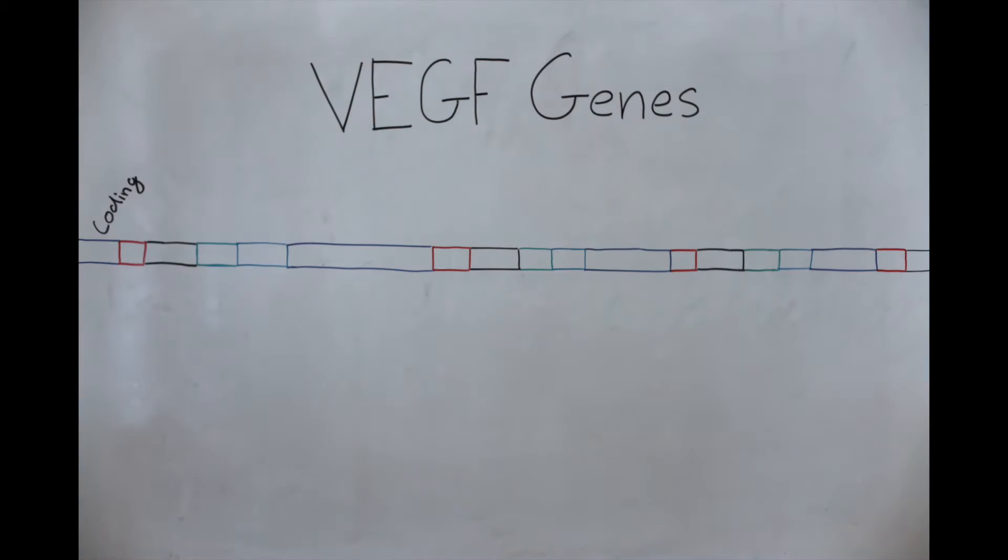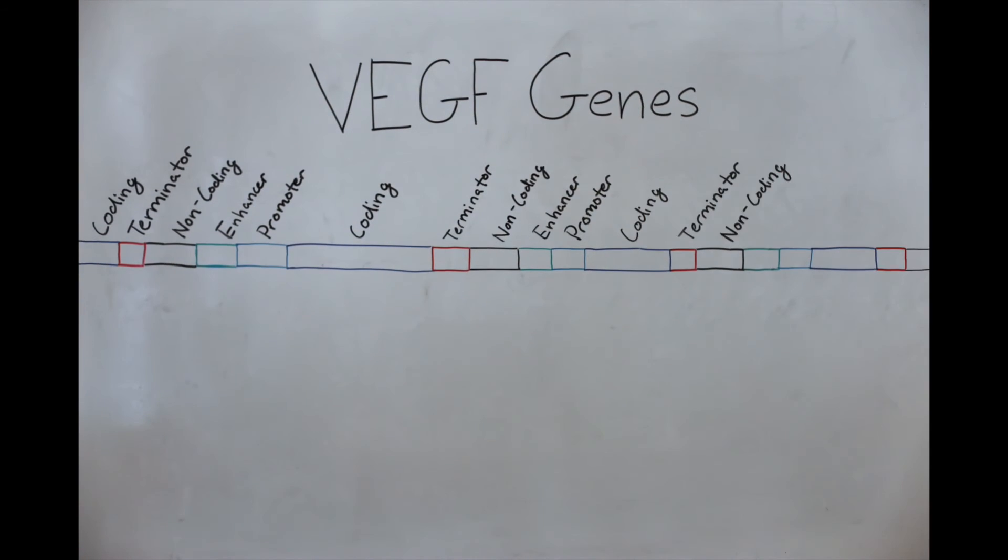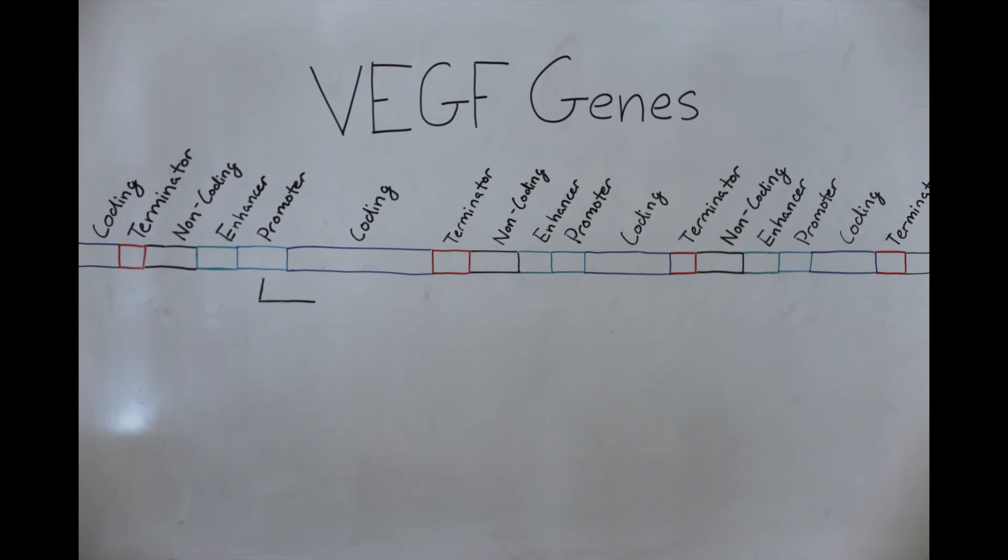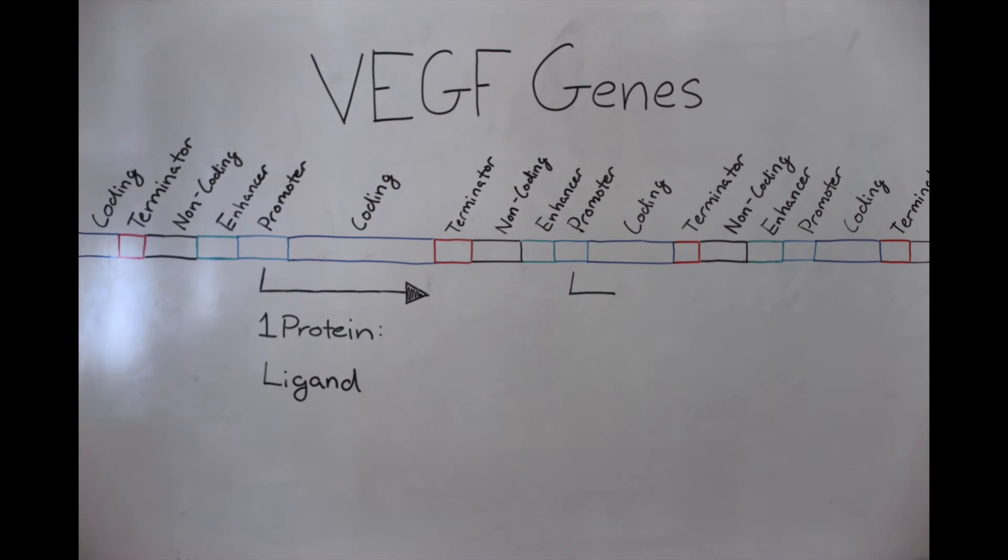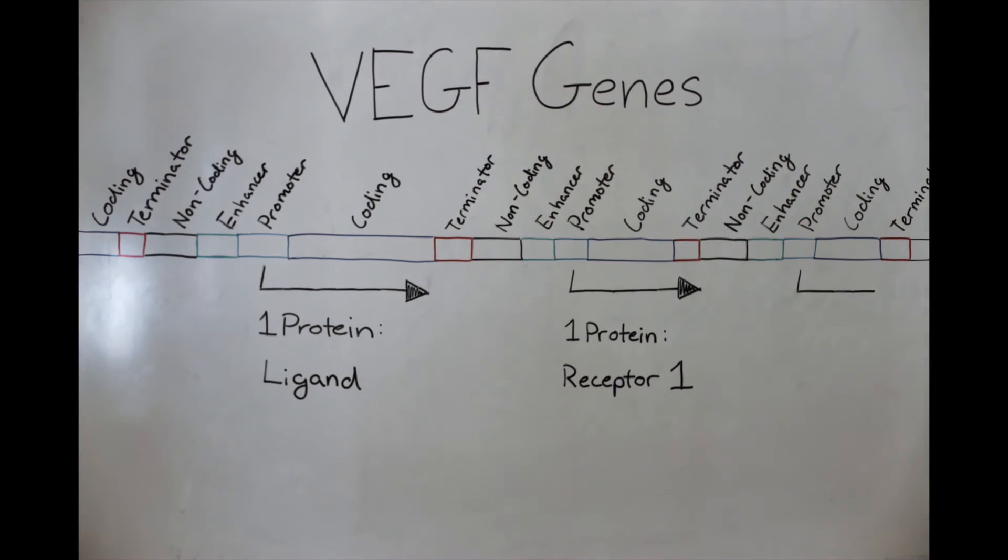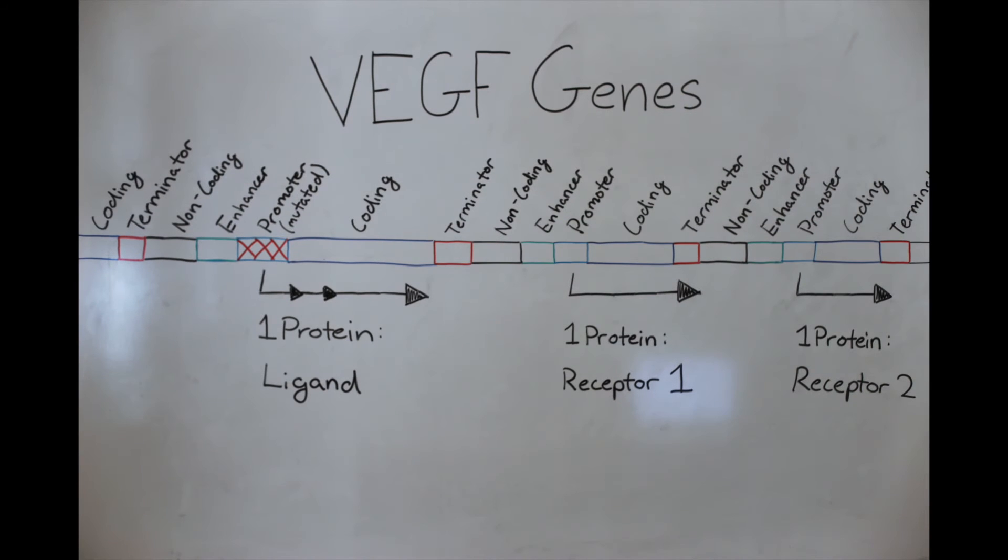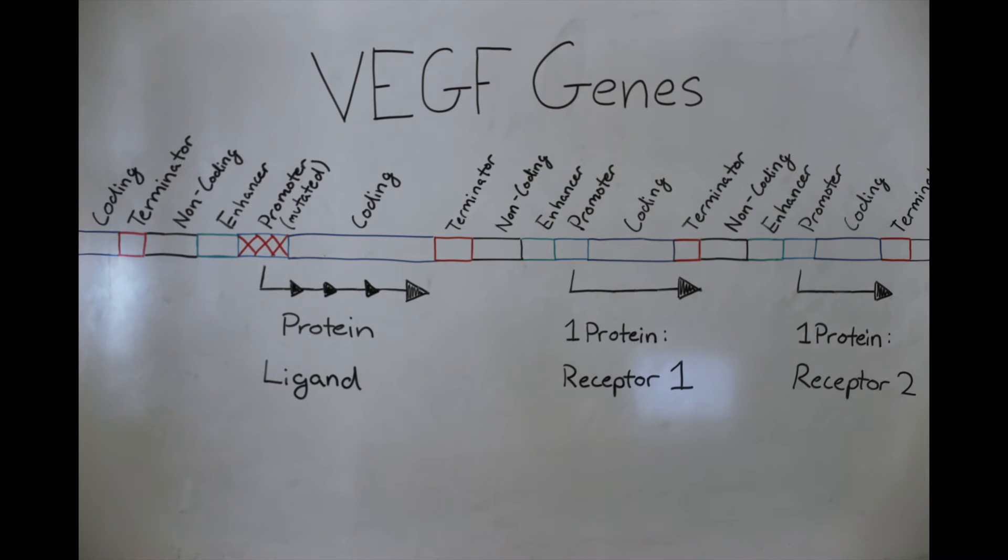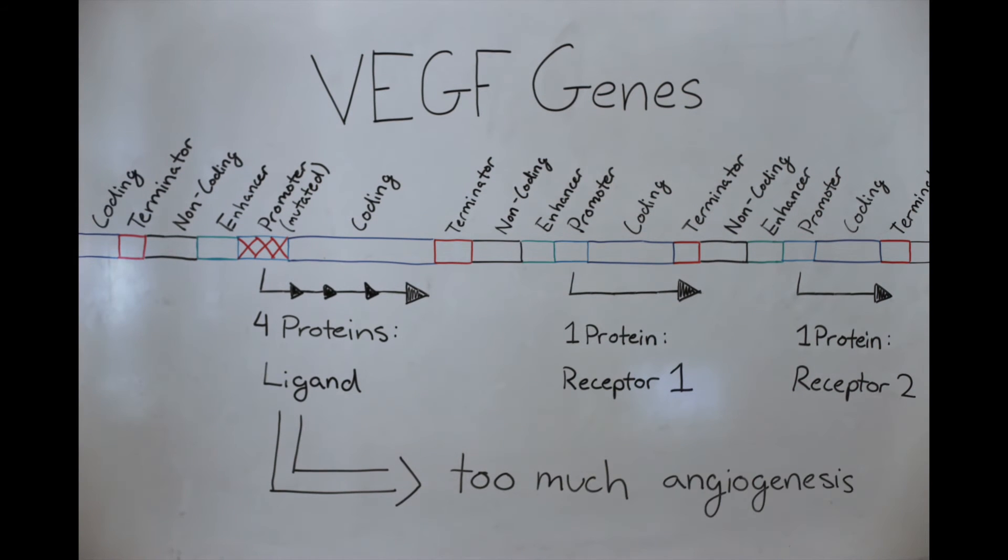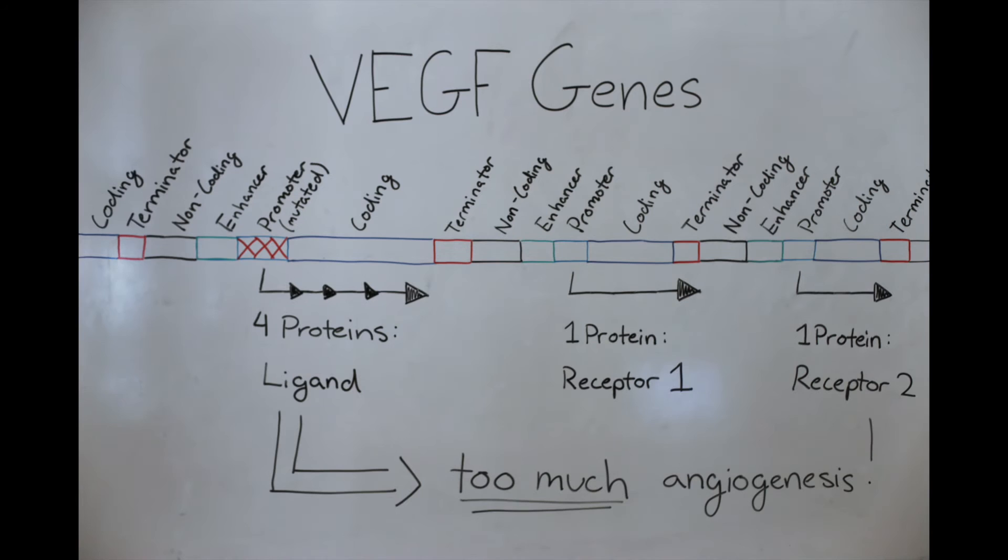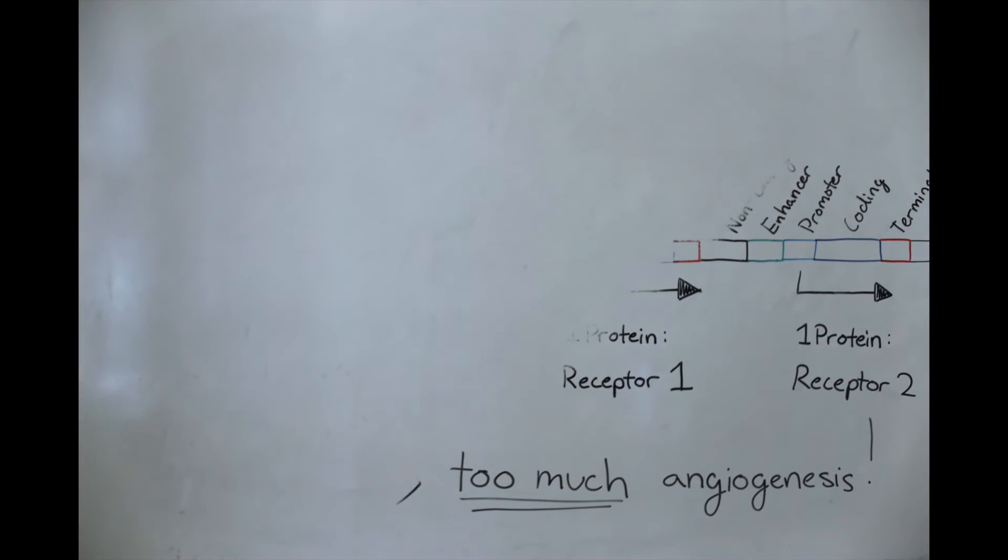VEGF genes are proto-oncogenes that encode for multiple versions of the receptors and the ligands. For this video, I've depicted these genes as being right next to each other, but in reality, a number of other genes separate them. When the regulatory regions of the VEGF genes become mutated in the DNA of mature cells, the coding regions of the genes become constantly activated, becoming oncogenes. Too many proteins are created and too much angiogenesis occurs, allowing the cells to grow and replicate uncontrolled.